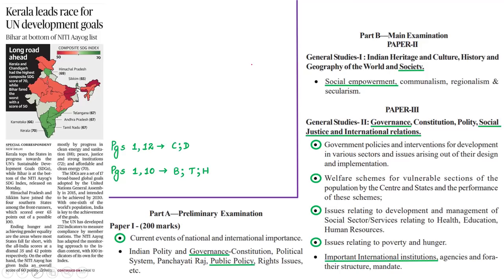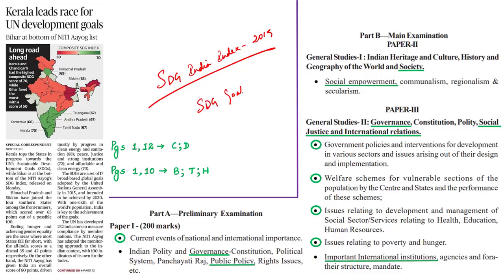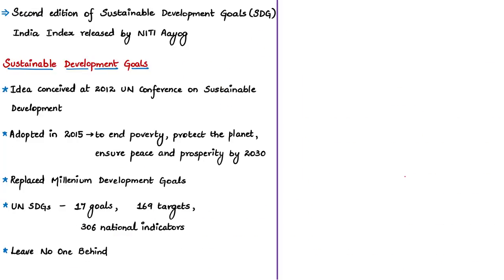This news article is about the SDG India Index 2019. Last year saw the first edition; this year, Niti Aayog has released the second edition. The Sustainable Development Goals, also known as global goals, were conceived at the UN Conference on Sustainable Development held in Rio de Janeiro in 2012. They were adopted by all UN member states in 2015, committing nations to end poverty, protect the planet, and ensure peace and prosperity by 2030.